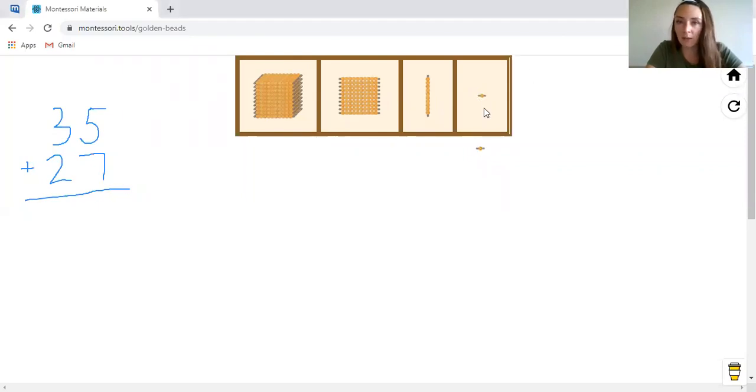So to set up 35, we need five unit beads: one, two, three, four, five. And then we need three 10 bars, right?